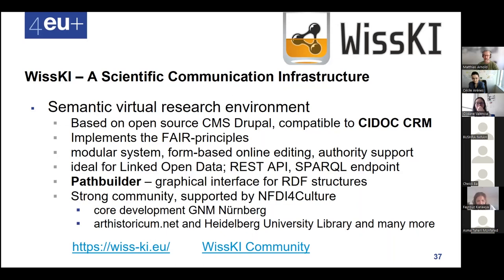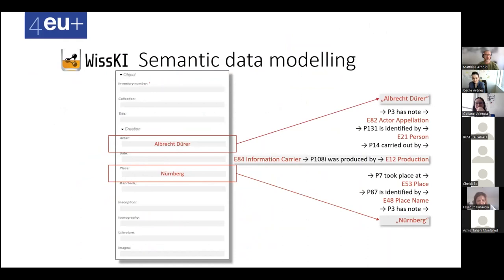WissKI has a strong community within NFDI4Culture. It was developed at the art historical network in Nuremberg, adopted by Heidelberg University Library, and used in Erlangen, Marburg, Munich, and many more places. One of the main features is the Path Builder — a graphical interface to model the semantic structure of your data according to CIDOC CRM. For example, to encode the artist Albrecht Dürer: you need to model the information character carrier, produced at a production event, carried out by a person with a name, and produced at a place like Nuremberg.